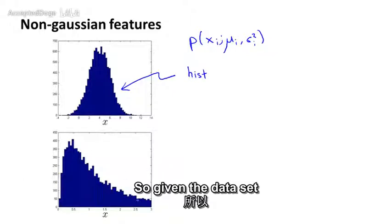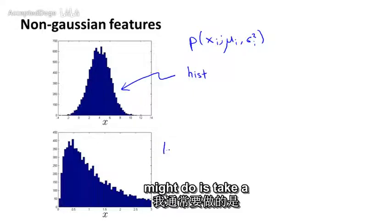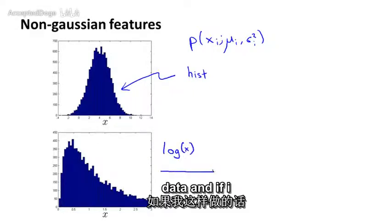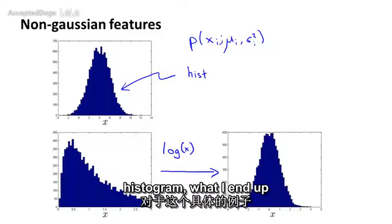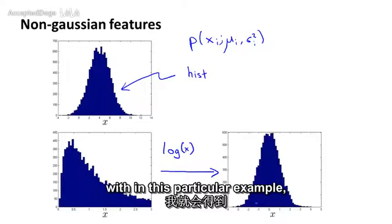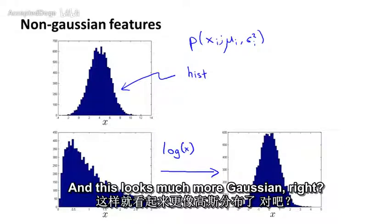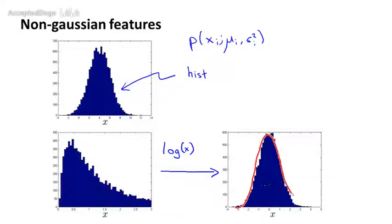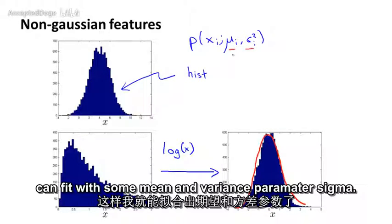Given a dataset that looks non-Gaussian, what I might do is take a log transformation of the data. If I do that and re-plot the histogram, what I end up with in this particular example is a histogram that looks much more Gaussian — much more like the classic bell-shaped curve that we can fit with some mean and some variance parameter sigma.